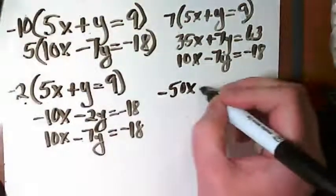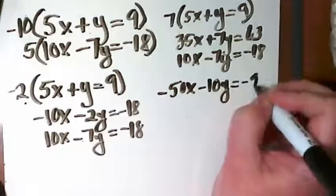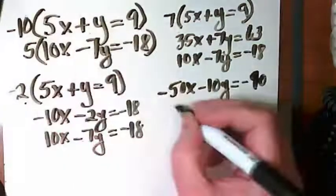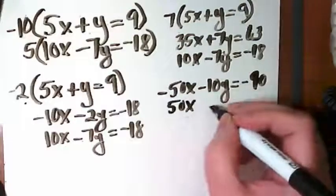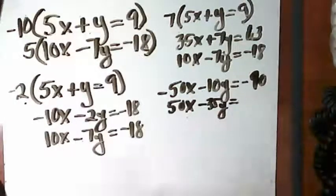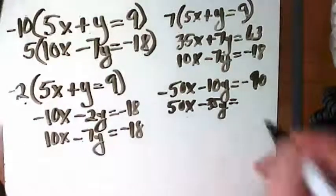Negative 50x minus 10y equals negative 90. Negative 50x minus 35y equals, I don't know, negative 18 times 5 in my head. It is negative 90.